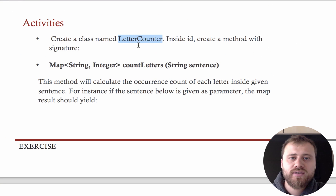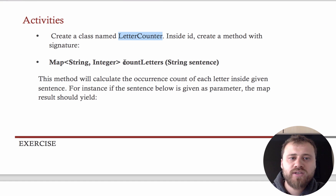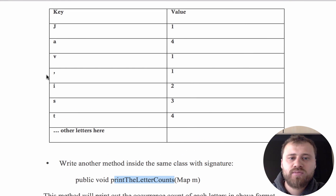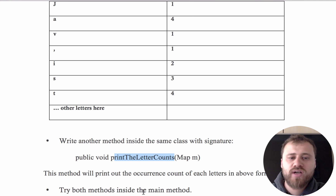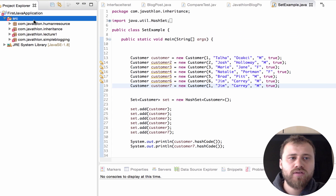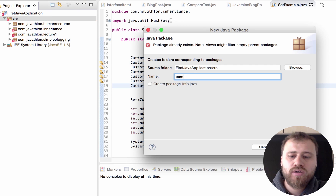That's why we will create a class named LetterCounter. We will create a method inside it that gets a sentence as a string and calculates each letter's occurrence number, putting the results into a letter occurrence counts map. After that we will pass this map into the printLetterCounts method inside the same class, and this table will be printed out. Then we will try this code inside the main method.